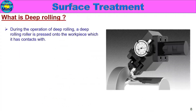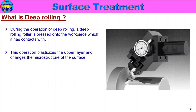What is deep rolling? During the deep rolling operation, the deep rolling roller is pressed onto the workpiece surface, which increases the strength of the surface. The workpiece rotates while the roller continues to press and move. This operation plasticizes the upper layer and changes the microstructure of the surface — the upper layer undergoes plastic deformation.